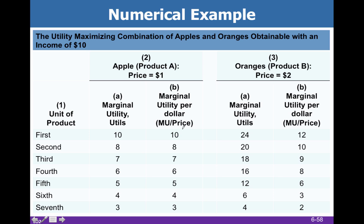So now we're going to start all over and figure out marginal utility per dollar. If you've got $10 and you're going to spend it only on apples and oranges, the first thing you're going to buy is the thing that gives you the most marginal utility per dollar — meaning we're going to buy an orange. Now we have $8 left. We go to our next best alternative. We can afford both the second orange and the first apple at $3 total, so we buy both. We've now spent $6 on oranges and $1 on apples, leaving us $3.